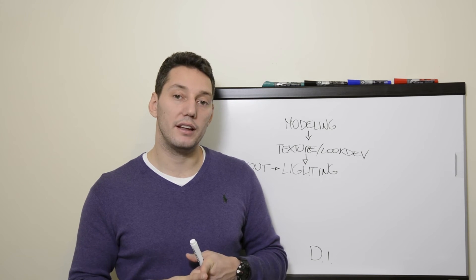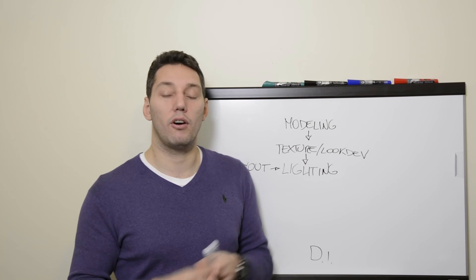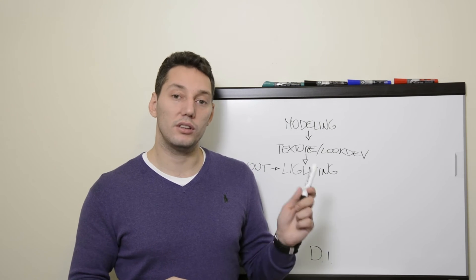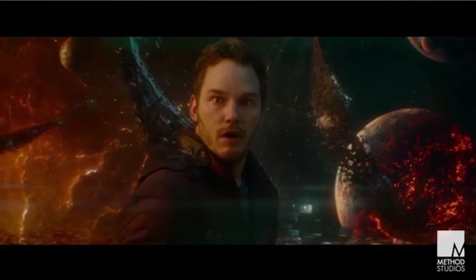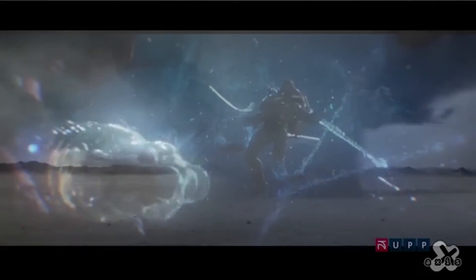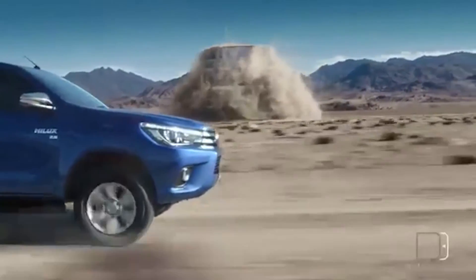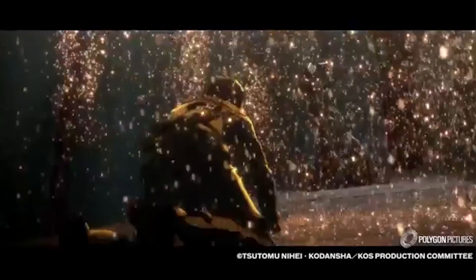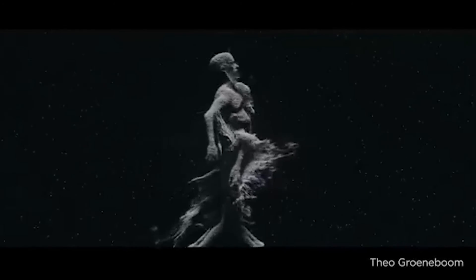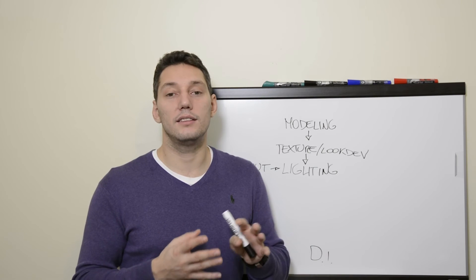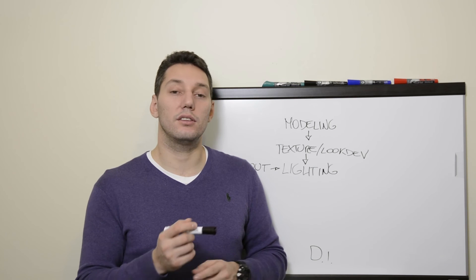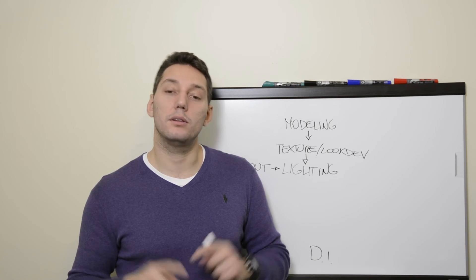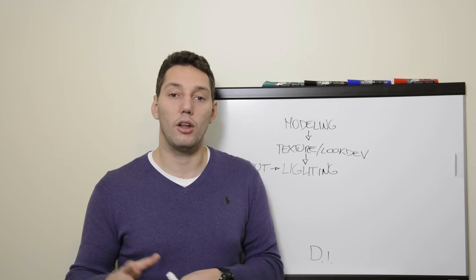In some companies, the effects department renders their own effects — meaning they handle the look development of the effects themselves. In other situations, the effects artists pass the data to the look development or lighting department, which takes care of making the effects look real. Sometimes it's easier for effects to render internally because effects simulations are very heavy and require a lot of machine power. If the look doesn't look right in look development or lighting, it has to go back to effects for re-simulation, creating a lot of back and forth.